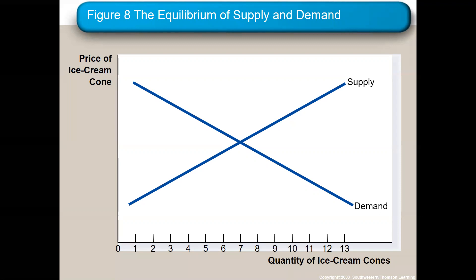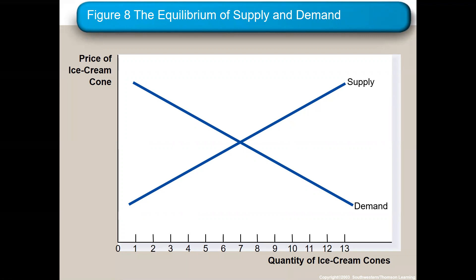A change in price impacts quantity demanded. For income and normal goods: income up, demand up. For inferior goods: income up, demand down — and obviously they go the other way too. Normal goods: income up, demand up. Inferior goods: income up, demand down.